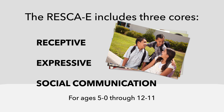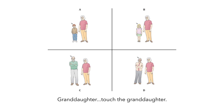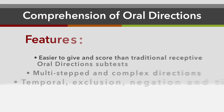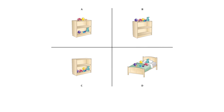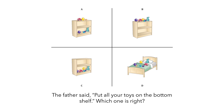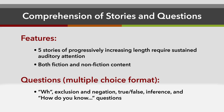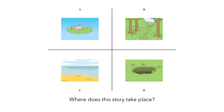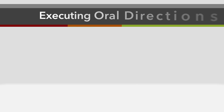Here's a quick overview of the RESCA-E. The receptive core includes comprehension of vocabulary, comprehension of oral directions, and the comprehension of stories and questions. The receptive supplemental subtests include comprehension of basic morphology and syntax, and executing oral directions.